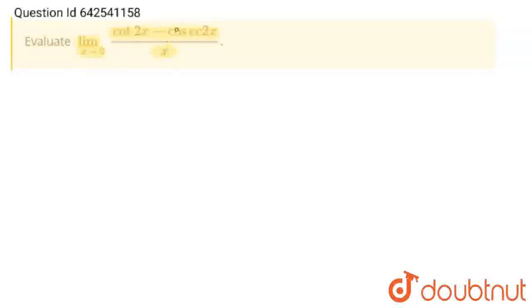See, what I am going to do in this. I am going to write cot 2x as cos 2x upon sine 2x minus 1 upon sine 2x, and whole upon x, and limit is x tends to 0.